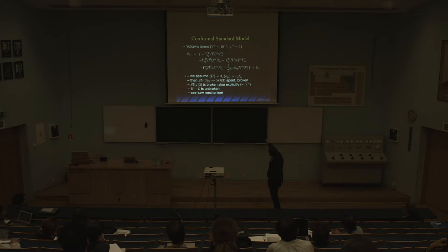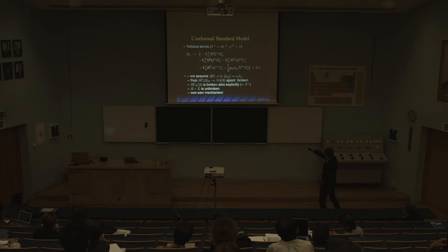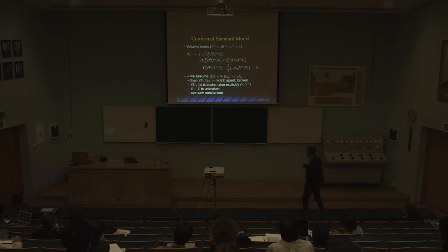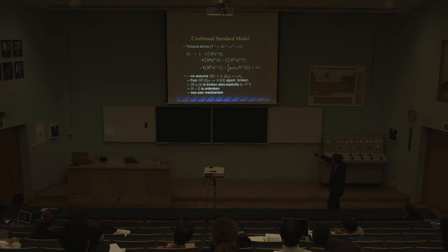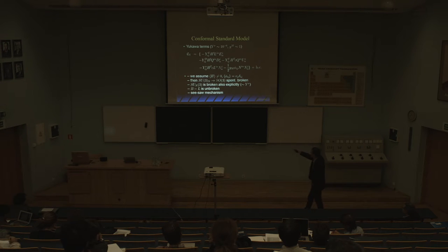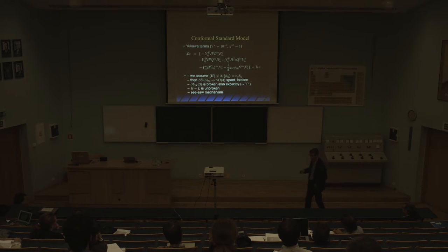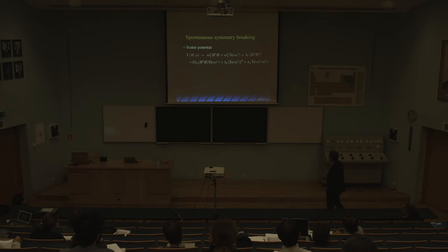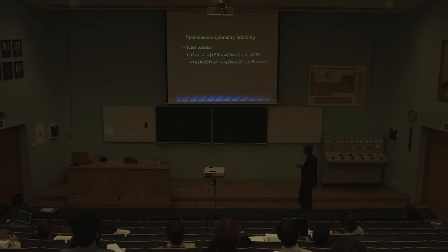To have the seesaw, we assume Y_nu is of order 10^-6 and the expectation value of Phi is of order 1, so that neutrinos are below 1 eV. This is not unusual because one of the Yukawa couplings — connected to the electron mass — is also roughly 10^-6. We assume that both H and Phi are spontaneously broken. Without this breaking, we have approximate SU(3)_N symmetry with the right chiral sector. Seesaw mechanism acts here.